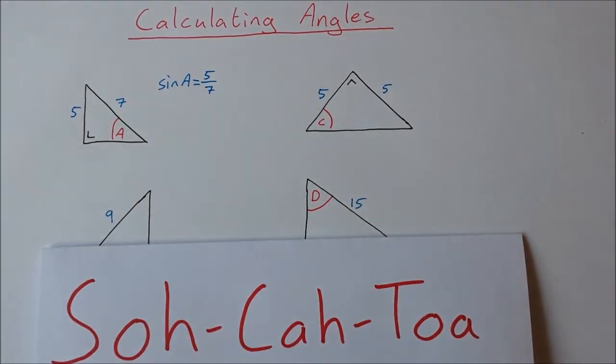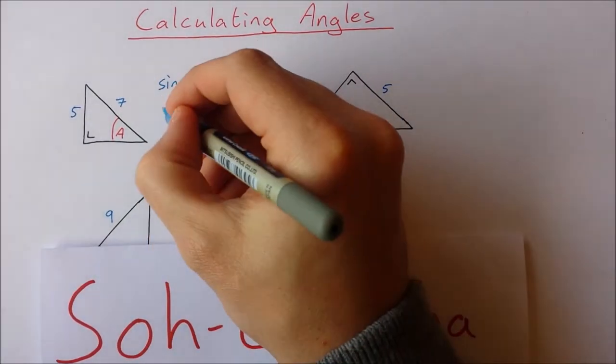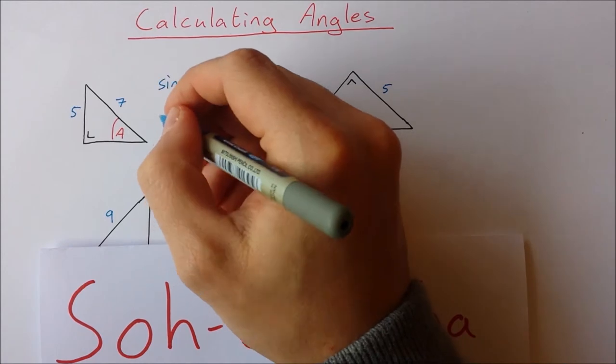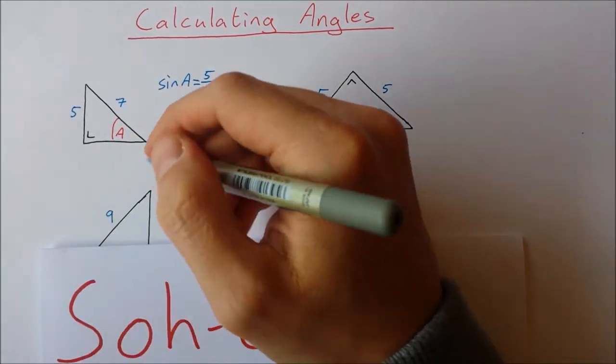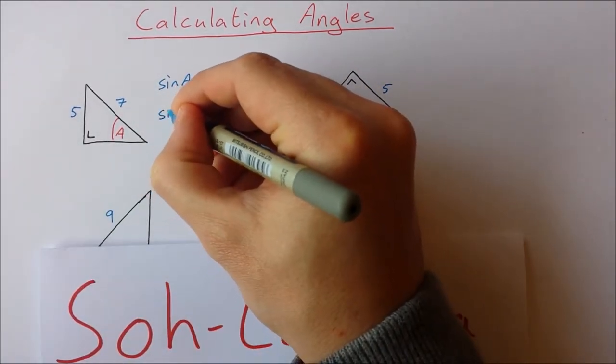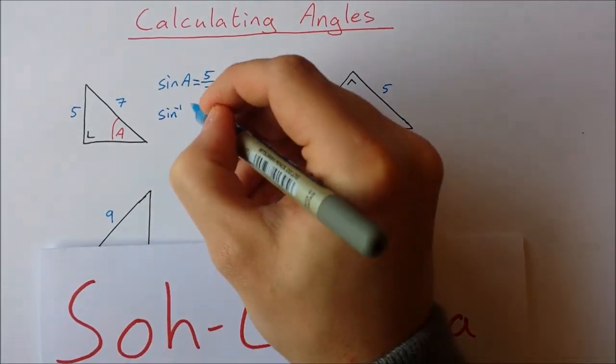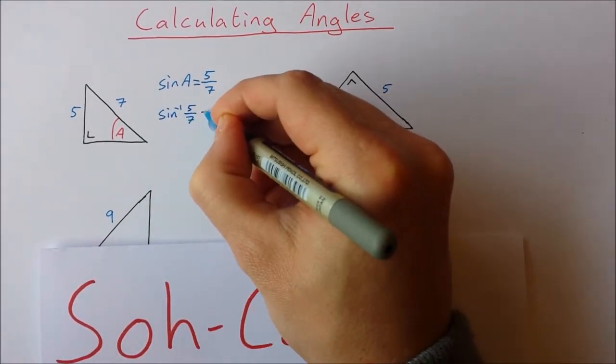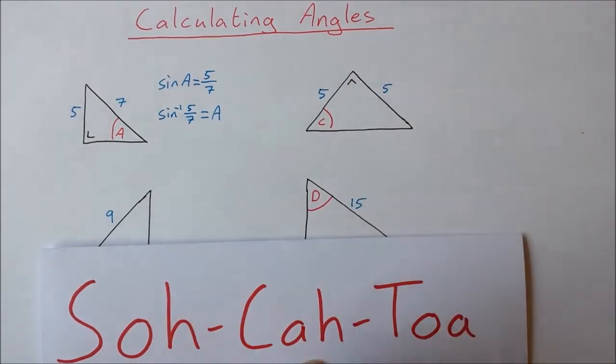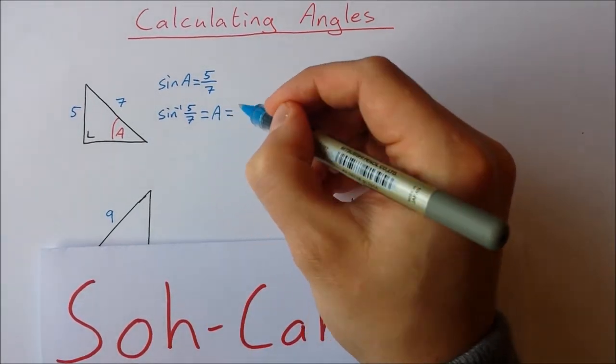So the sine of A is 5 over 7. Now the way we calculate the angle A is we do what's called the inverse sine or sometimes called the arc sine. So it's written like this sine inverse of 5 over 7 is equal to our angle A.